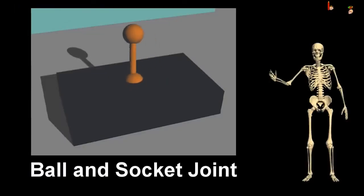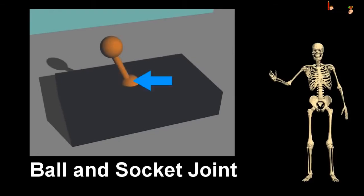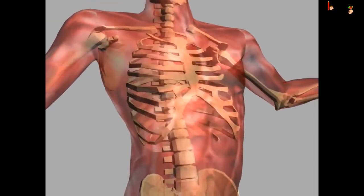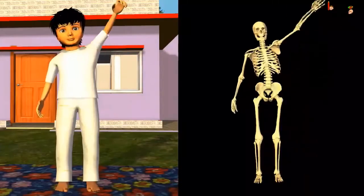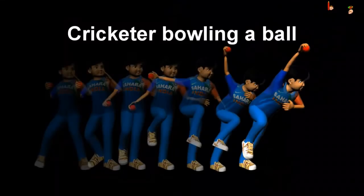Let us see the ball and socket joint. It allows the maximum movement. The round end of one bone fits into the hollow part of another bone, hence the name ball and socket joint. Hip joint and shoulder joints are some of the ball and socket joints in our body.